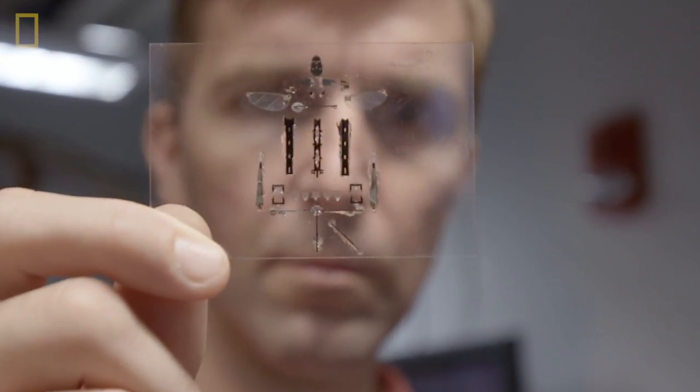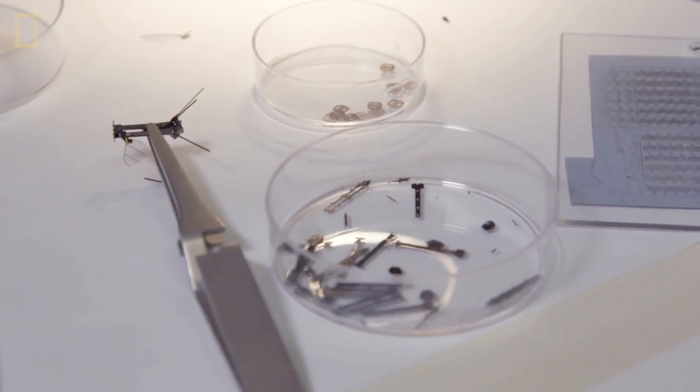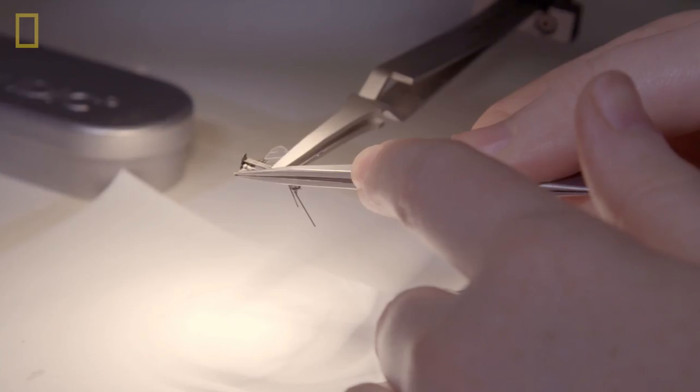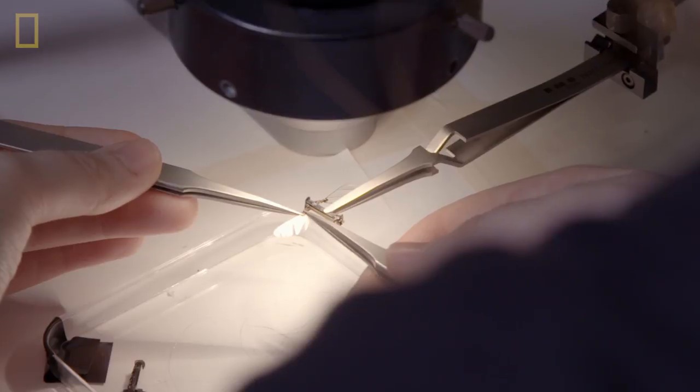Imagine a robot built from tiny metal hairs. There still are a lot of components. Some of it's done through manual assembly. You're taking these two-dimensional components and then assembling them into three dimensions.